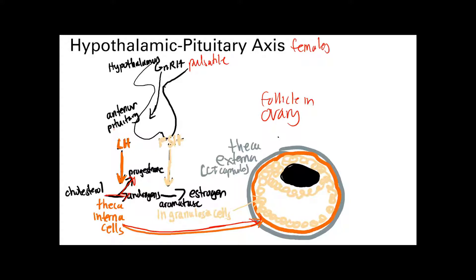These androgens travel from the theca interna cells to the neighboring granulosa cells. FSH stimulates these granulosa cells, which contain the enzyme aromatase. Aromatase takes the androgens that came over from the theca interna cells and converts them into estrogen.